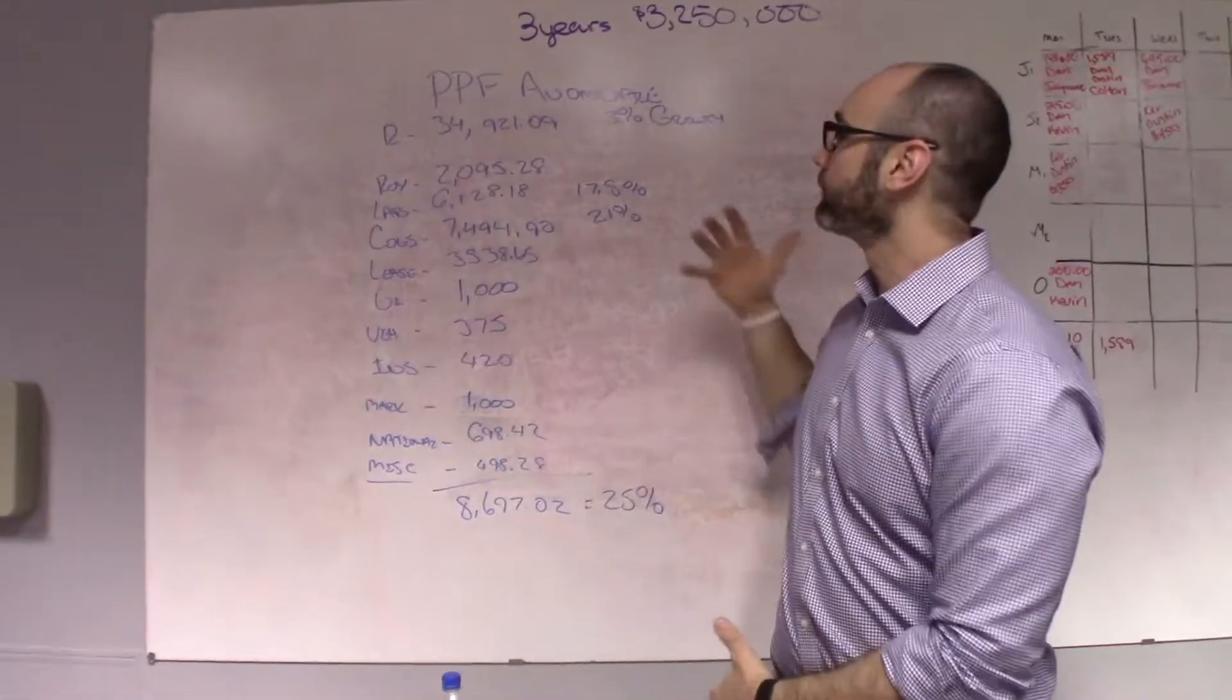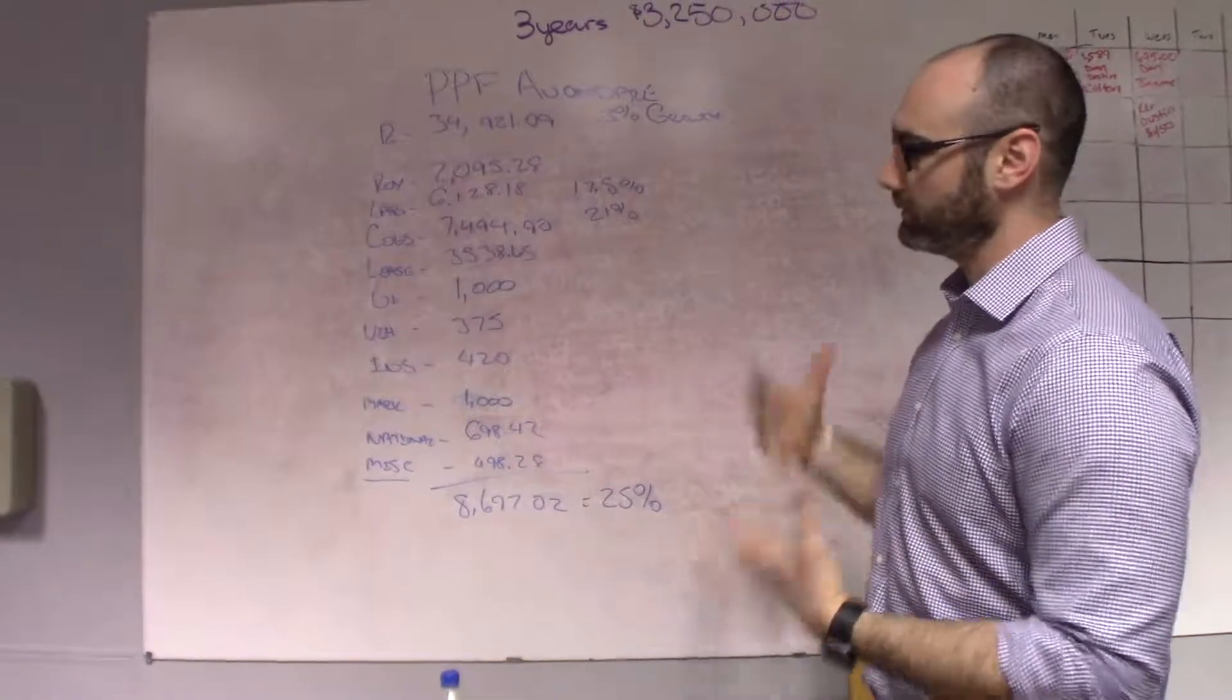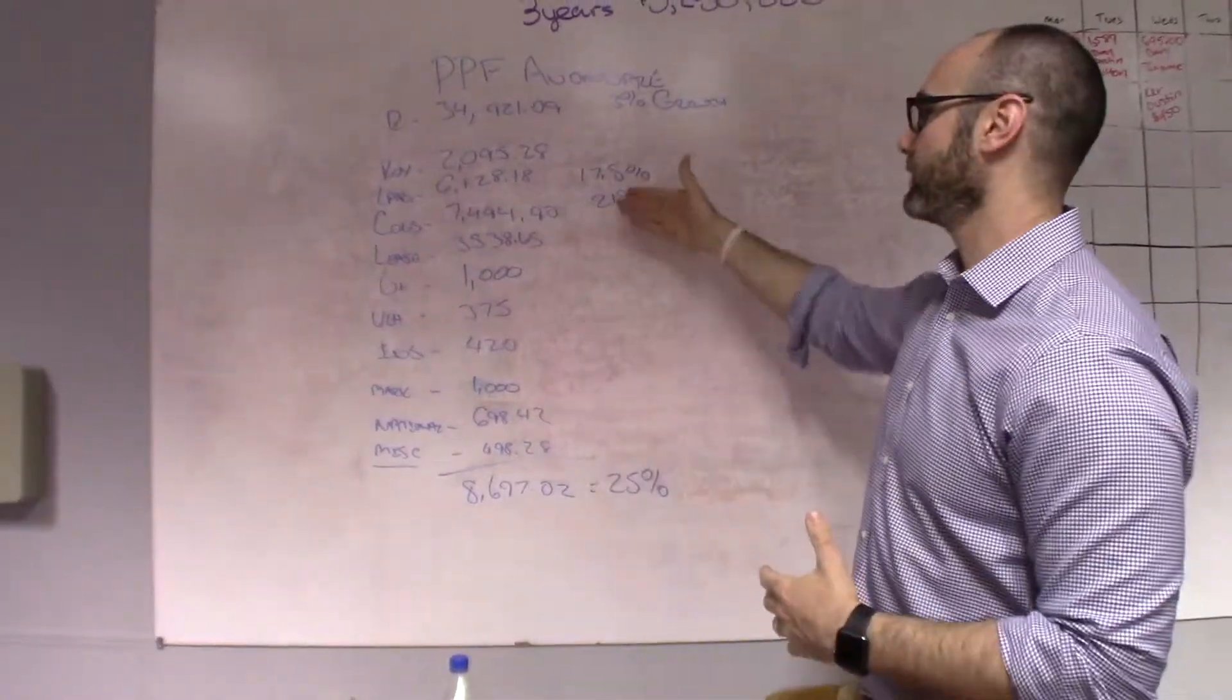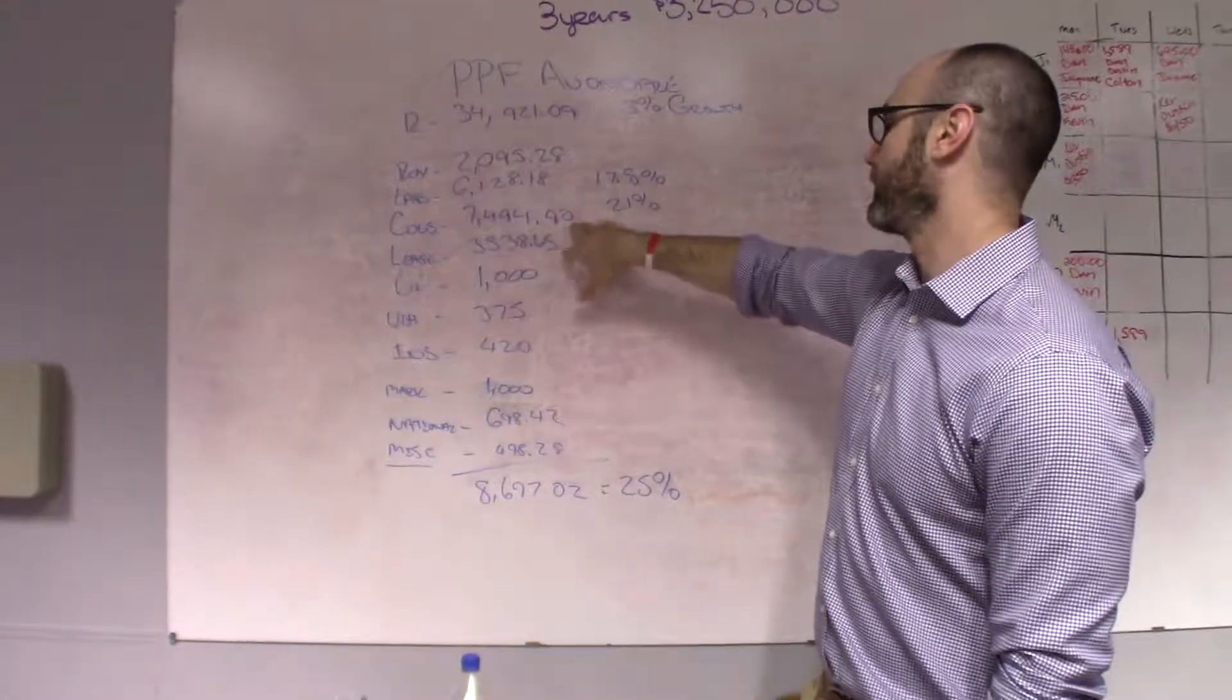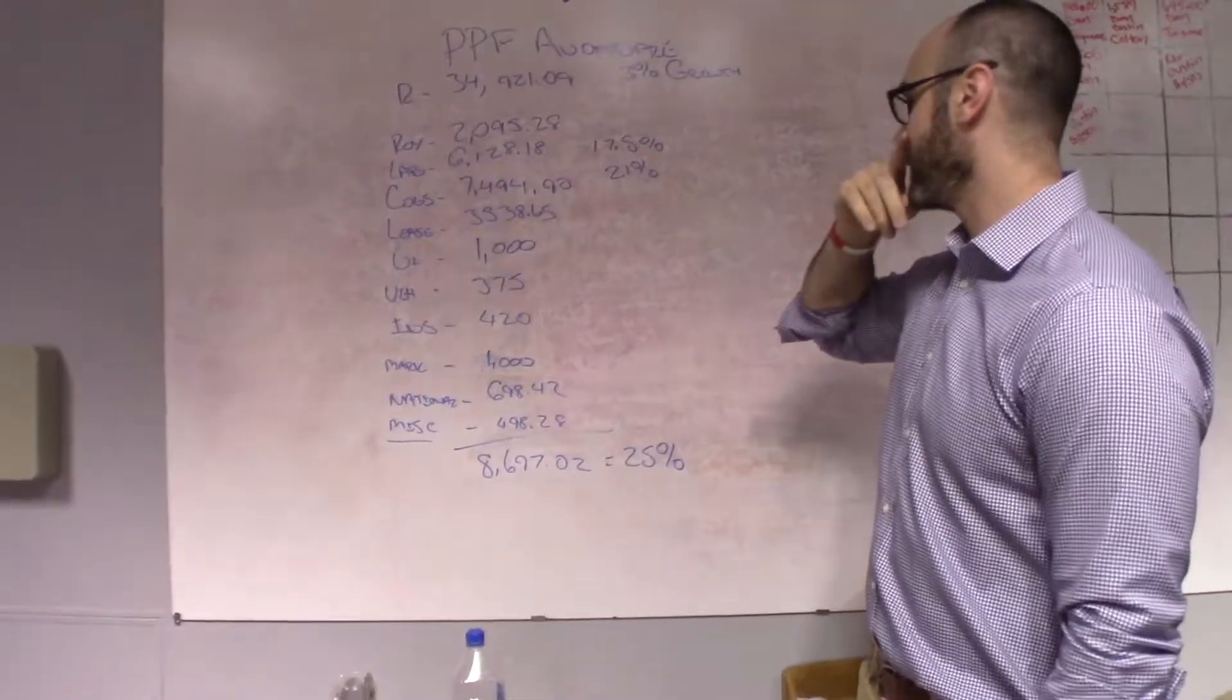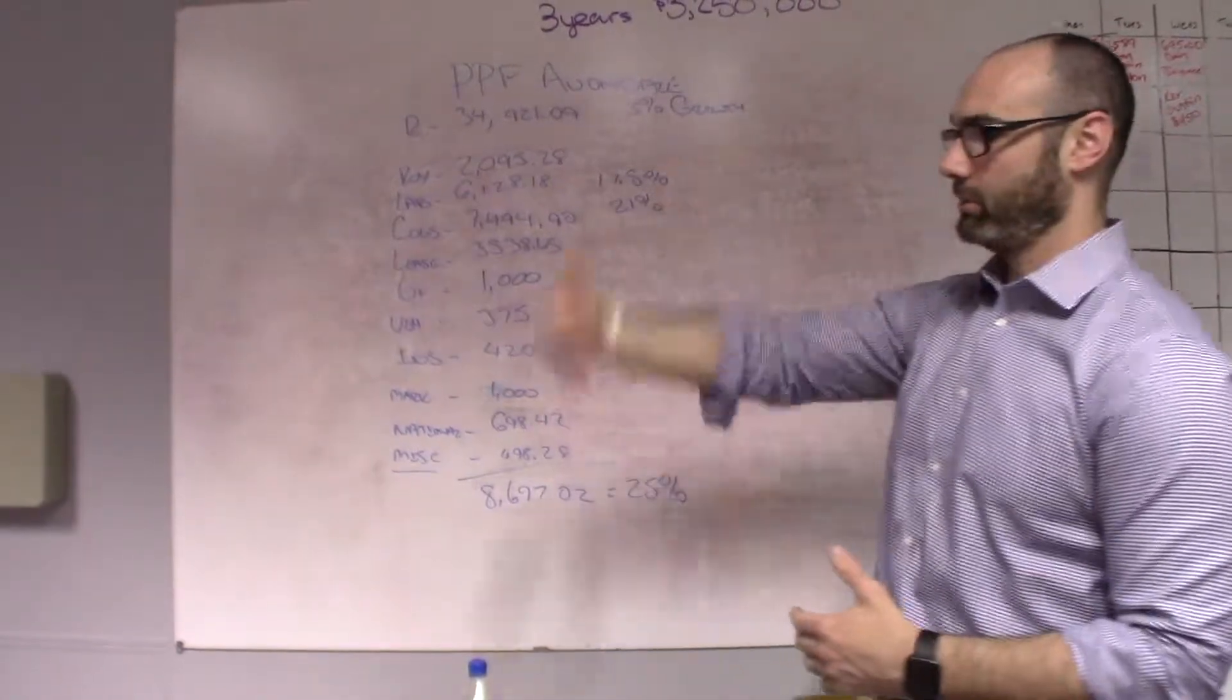So, that's our P&L for Pretzel Factory of Avondale. What do I see when I look at these numbers? These tell a story. And what the story is telling me is, with closing down for three days, we kept our labor really low. With cost of goods and our new ordering manager, he's doing a great job keeping it at 21%. We actually have a little bit extra because of those three days, and that's going to roll into this month.